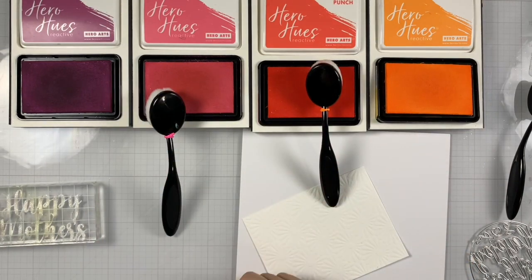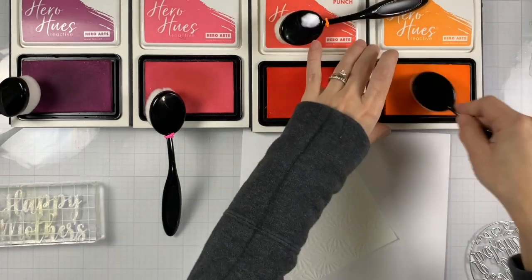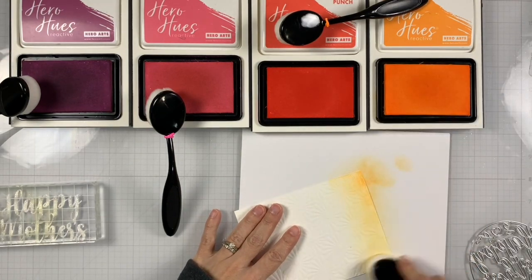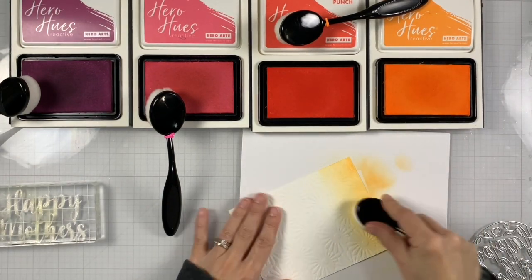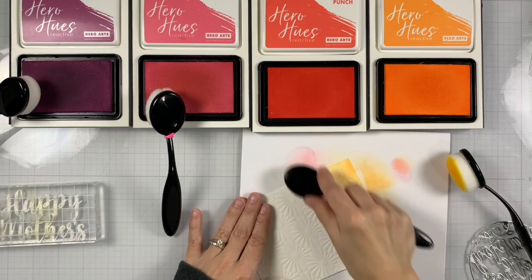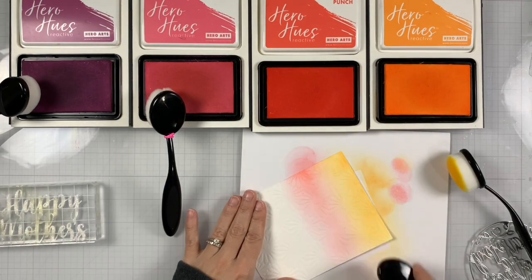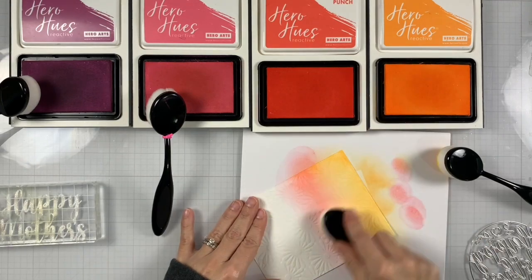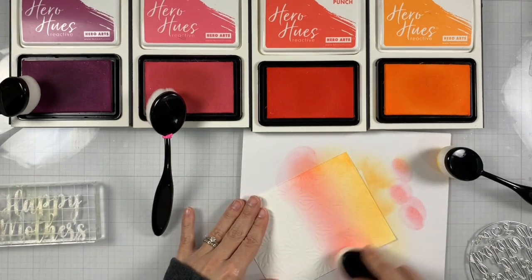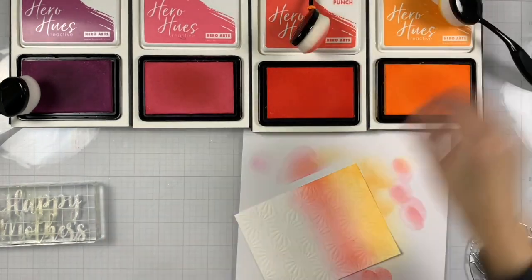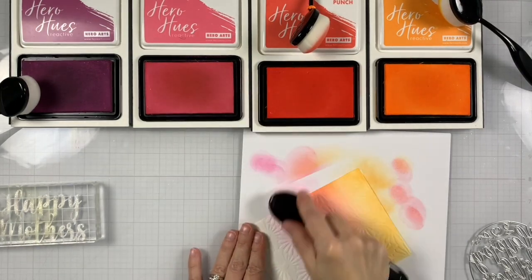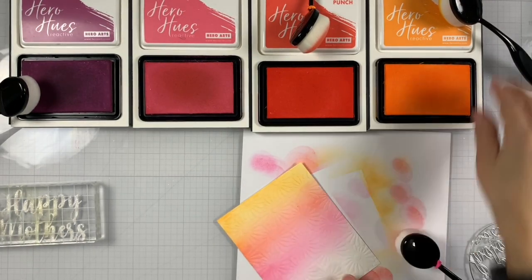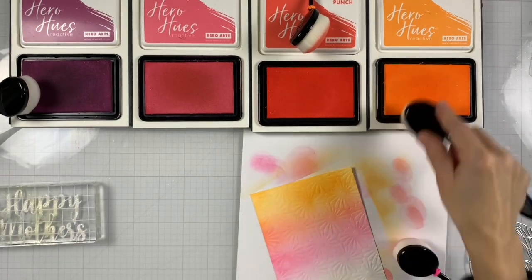While that dries, we are going to do some ink blending on the background. I trimmed down my background to 4 1⁄4 by 5 1⁄2. And I'm using Crimsicle, Fruit Punch, Taffy, and Berry Smoothie reactive inks. So I started with the Crimsicle and then I'm moving towards the darker. So the Crimsicle is going to be on the bottom of our card, and then the Berry Smoothie will be on top.